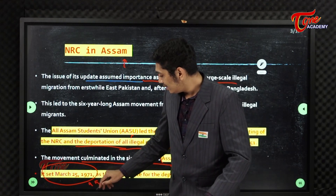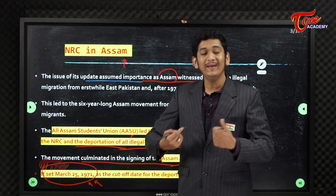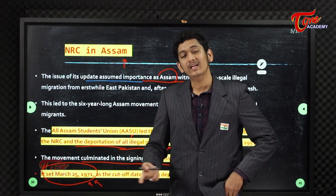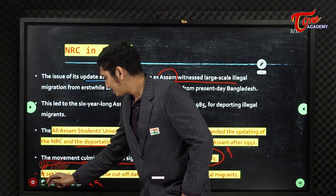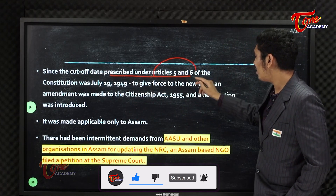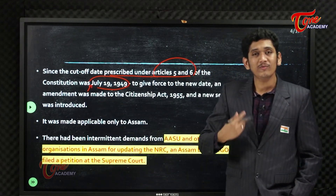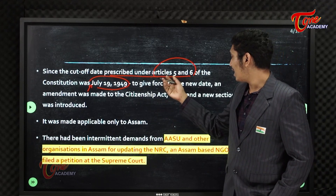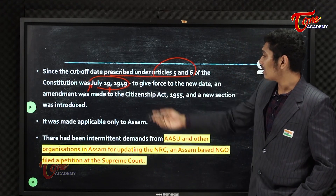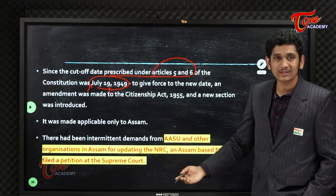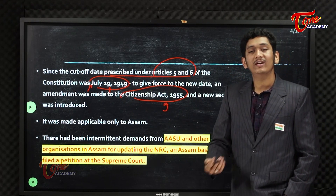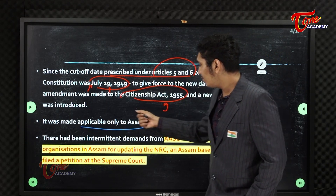The cut-off date means only the people who were in Assam prior to March 25th, 1971 will be included either in the voter list of Assam or as citizens of India. Whoever comes later will not be supported. Since the cut-off date prescribed under Article 5 and 6 of the Constitution for citizenship was originally 1949, we amended the Citizenship Act 1955 to introduce a new cut-off date. This was only applicable to Assam.